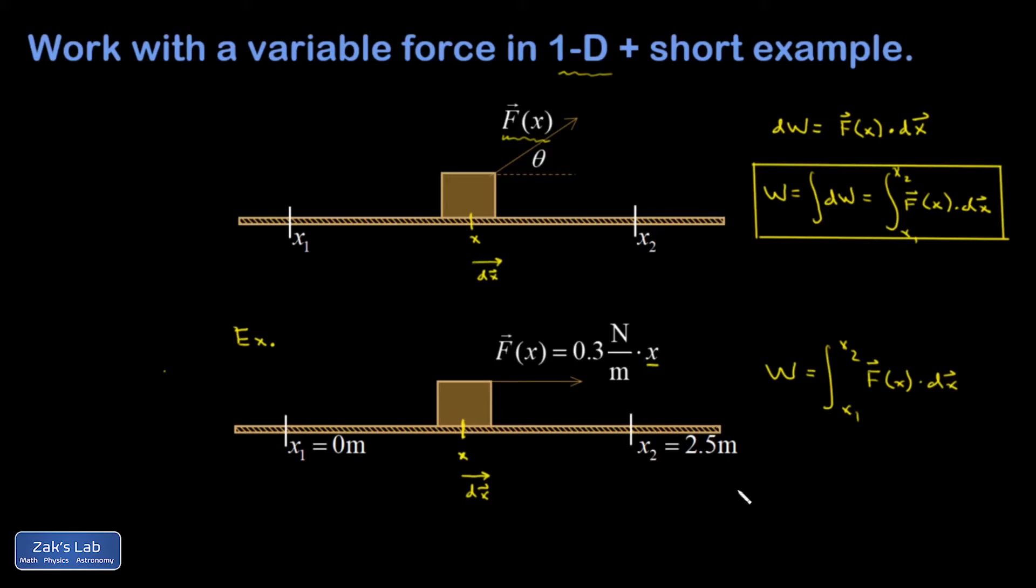The integral of F of x dotted into dx. Well, I can see that F of x points in exactly the same direction as dx, so the cosine theta from the dot product drops out because theta is equal to zero.